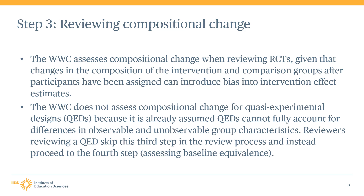The reason the WWC assesses compositional change when reviewing RCTs is that any change to the composition of the intervention and comparison groups after random assignment can introduce bias into intervention impact estimates. In other words, compositional changes mean that the randomized design may no longer account for differences in observable and unobservable characteristics of the groups.